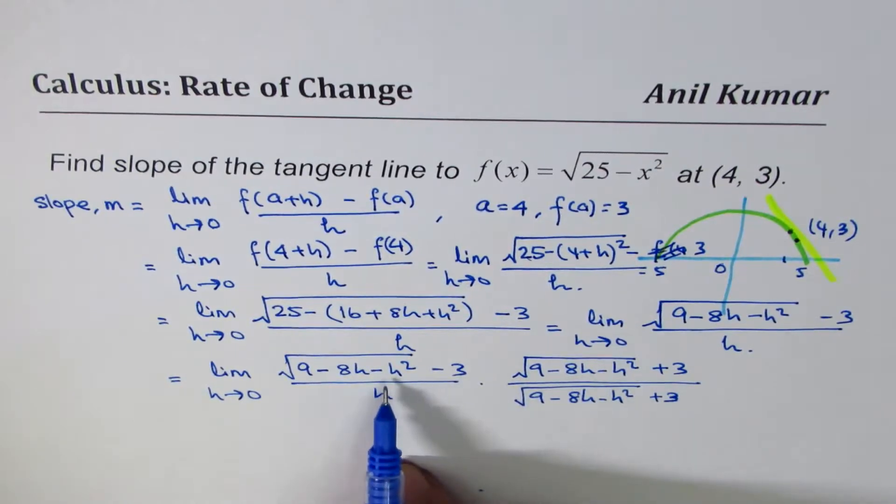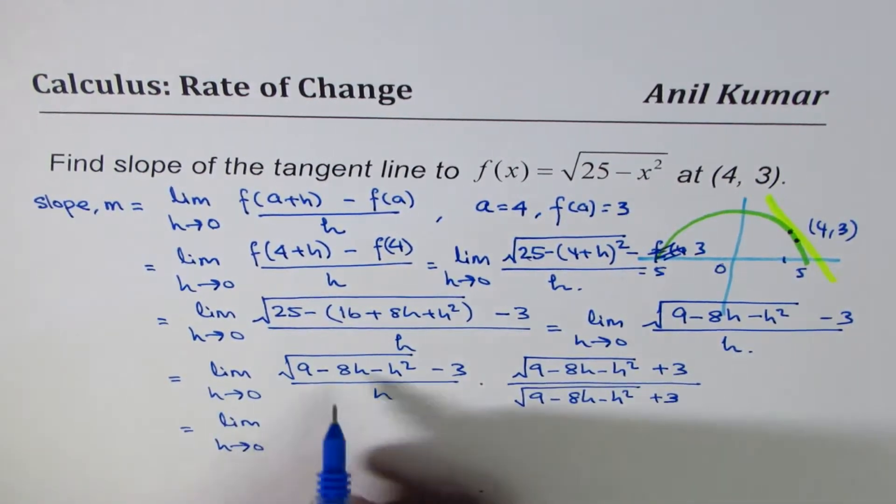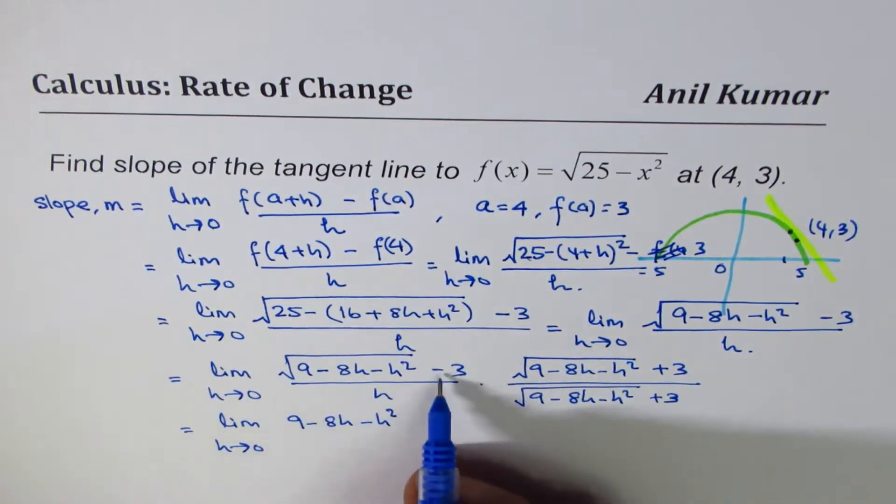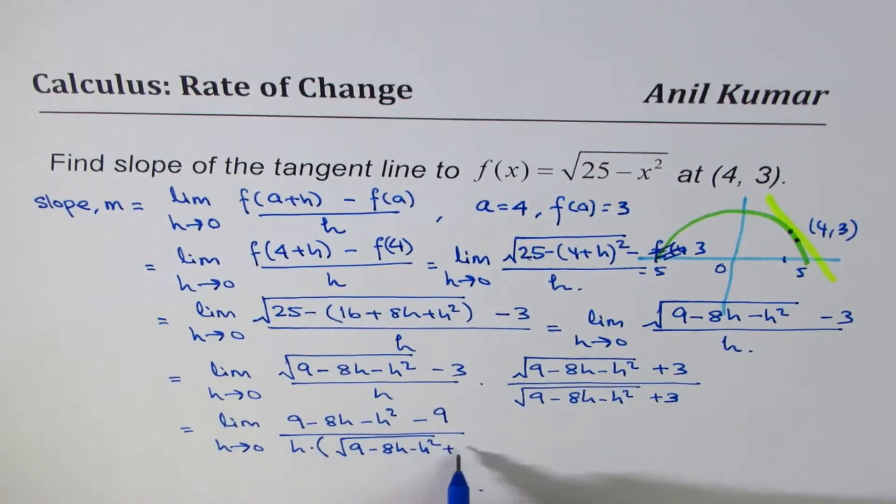So when you multiply, a minus b times a plus b becomes a square minus b square. So what we get here is limit, h approaches 0, square of square root will be 9 minus 8h minus h square, minus 3 square will give us minus 9, divided by h times square root of 9 minus 8h minus h square, plus 3.